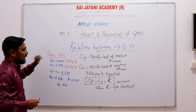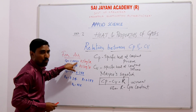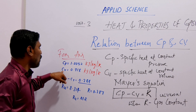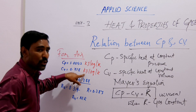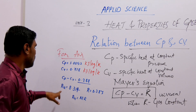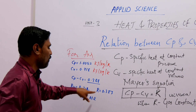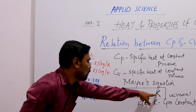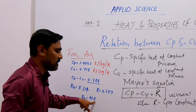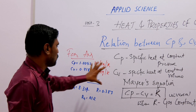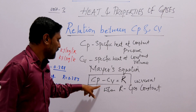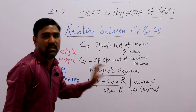The value of Cp is 1.0052 kJ per kg Kelvin and the value of Cv is 0.718 kJ per kg Kelvin. When we subtract Cp minus Cv, that is equal to 0.287, which is the universal gas constant R. So Cp minus Cv equals R equals 0.287. Also, Ru equals M into R, where M is the molecular mass and R is the universal gas constant.